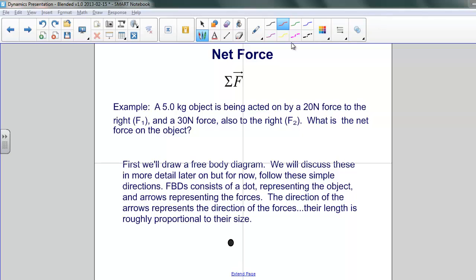So let's do an example and try to understand how to calculate net force. In this example, we have a 5 kilogram object acted upon by two forces. One is 20 newtons acting to the right, and another one is 30 newtons also acting to the right. The question asks us what the net force on the object will be.